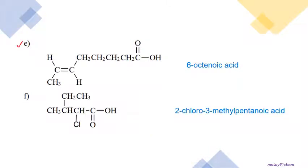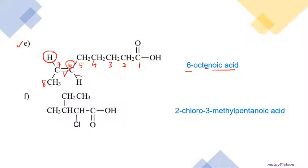For question 1e, counting from COOH gives carbons one through eight, so the parent is octanoic acid. However, within the chain there is a double bond at carbon six, making it 6-octenoic acid. Additionally, looking at the structure, the hydrogens are on opposite sides of the double bond, which means it is a trans configuration — so the full name is trans-6-octenoic acid.